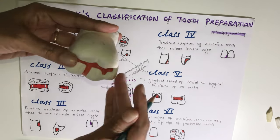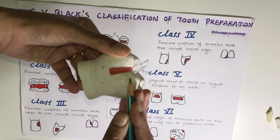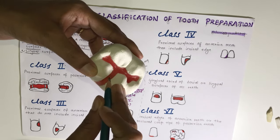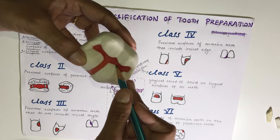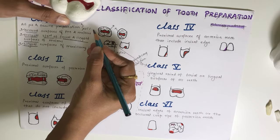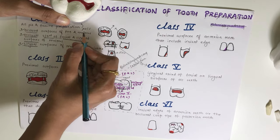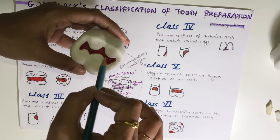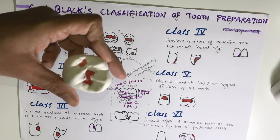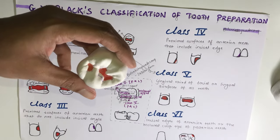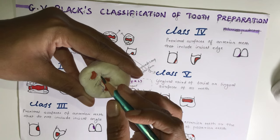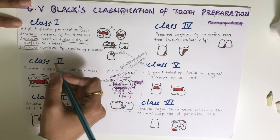To summarize Class 1: when the preparation extends onto the facial surface it is a Class 1 compound, and the conventional Class 1 is the occlusal surface of premolars and molars. There is also the Class 1 conservative tooth preparation, where you are preserving or conserving the ridge structure.